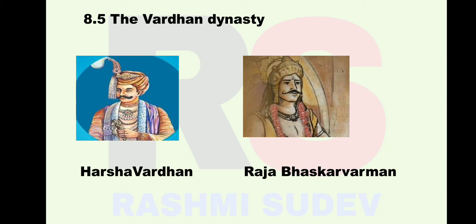Harshavardhan had good relations with Raja Bhaskaravarman from Kamarupa, which is today's Assam. He also had friendly relations with the Emperor of China and sent his ambassador to China to promote trade. The capital of Harshavardhan's empire was Kanauj, and trade progressed significantly during his reign.